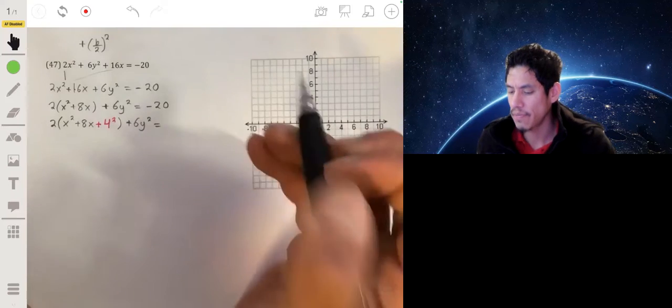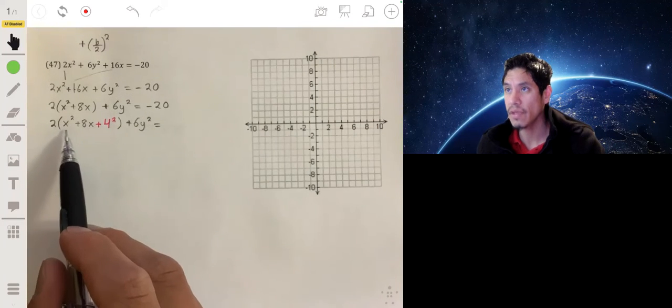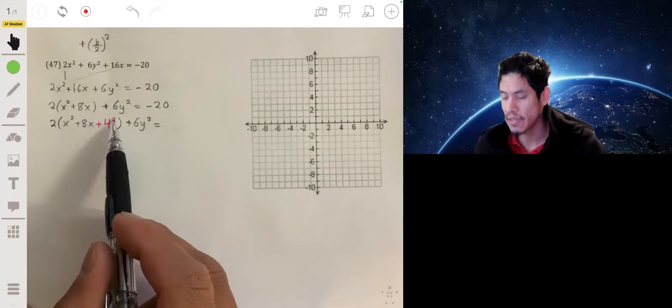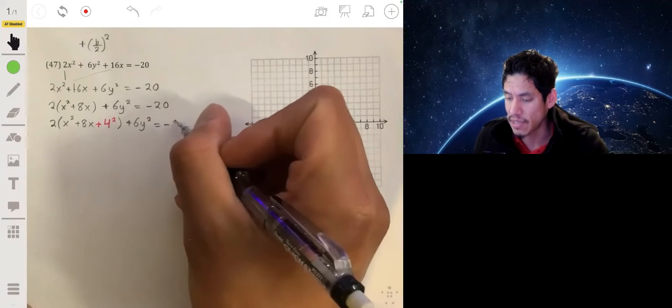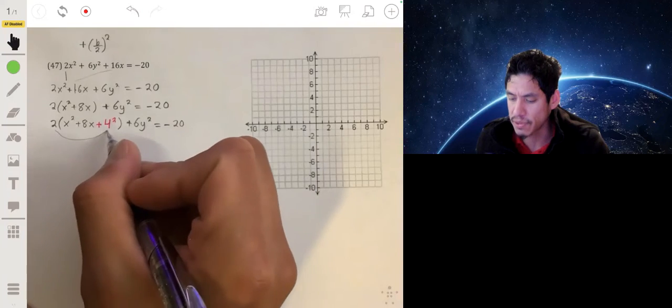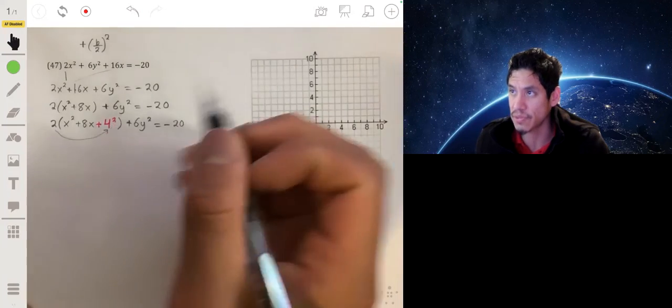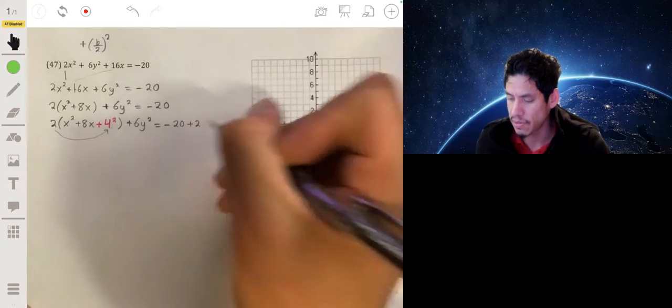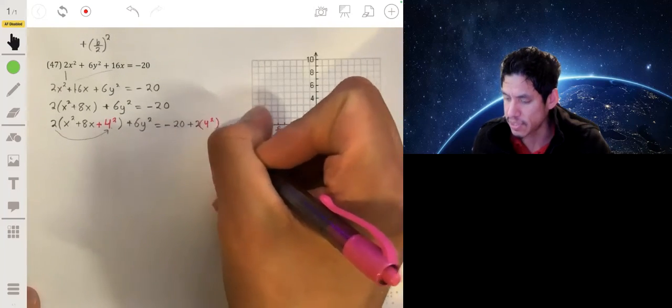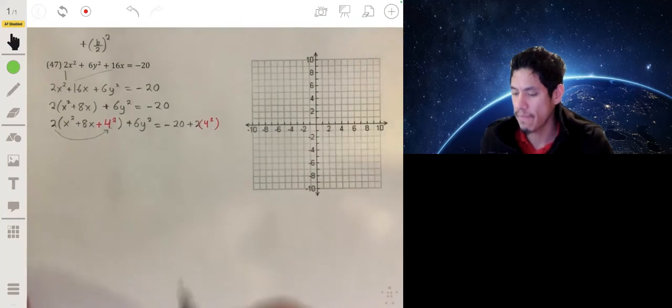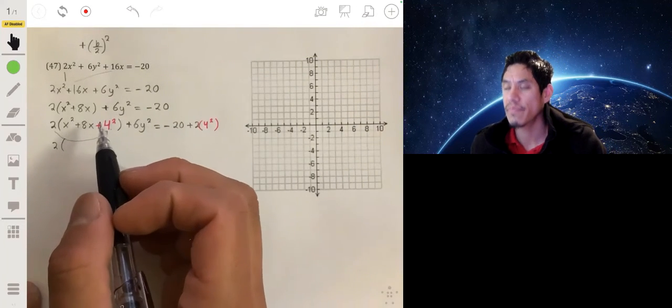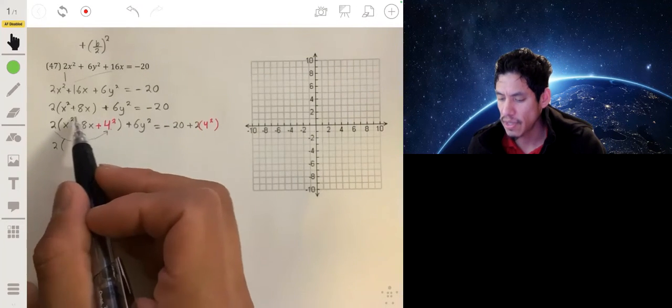Since we added 4 squared over here, we need to add that to the right side as well. But be careful, because you're not just adding 4 squared, you're adding 2 times 4 squared. So make sure you add 2 times 4 squared to each side.